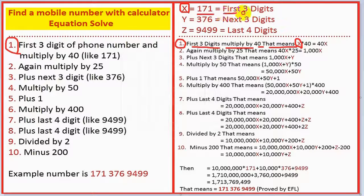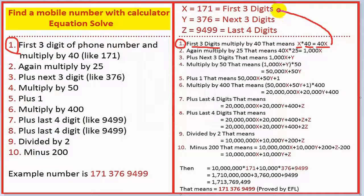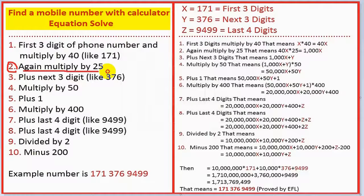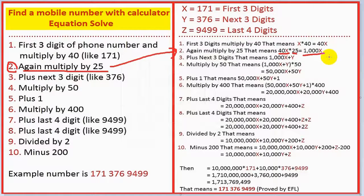X equals 171, that means the first three digits. Step one: X times 40 equals 40x. Step two: multiply by 25, so 40x times 25 equals 1000x.